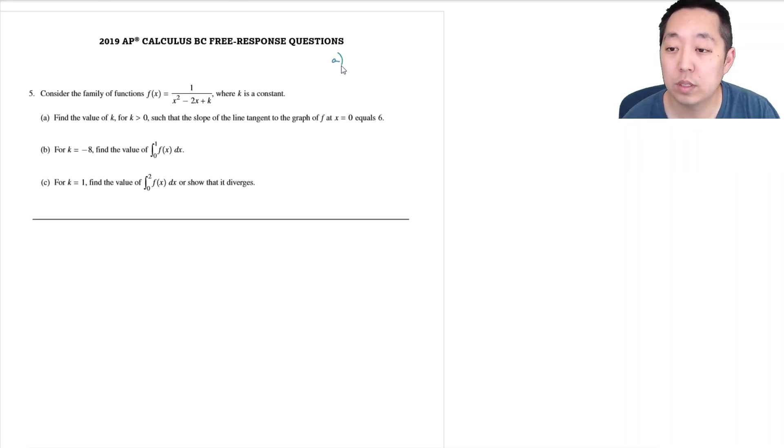I want to compute the derivative here. I'm going to write this as (x squared minus 2x plus k) to the negative 1. The derivative of this is negative (x squared minus 2x plus k) to the negative 2 times (2x minus 2).